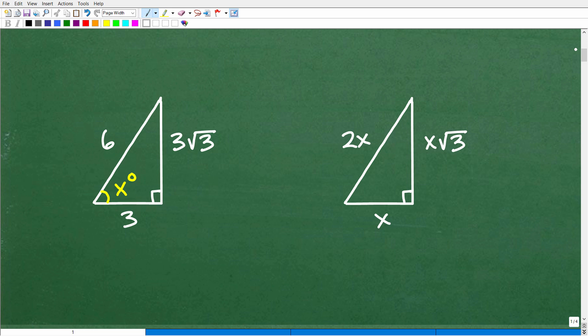All right, so what we're really dealing with right here is something called a special right triangle. Okay, you definitely must absolutely understand special right triangles. And there's two types that you need to know. There is the 30-60-90, and then there is the 45-45-90.